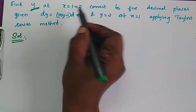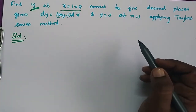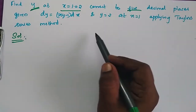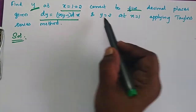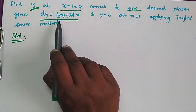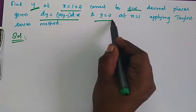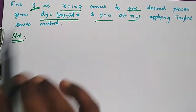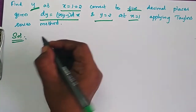Find y at x equal to 1.02, correct to 5 decimal places, given dy/dx is equal to xy minus 1, y is equal to 2 at x is equal to 1, applying Taylor's series.